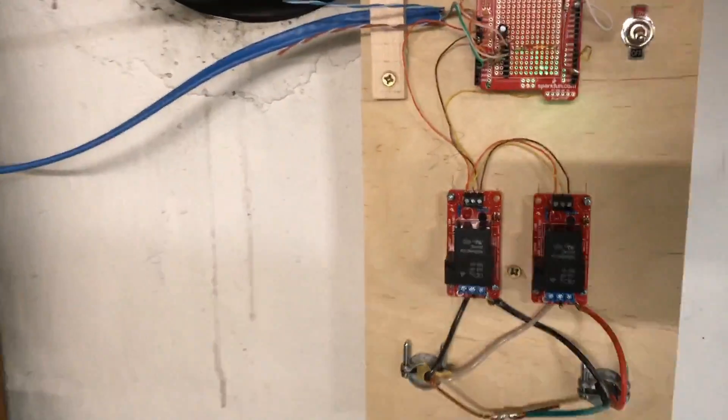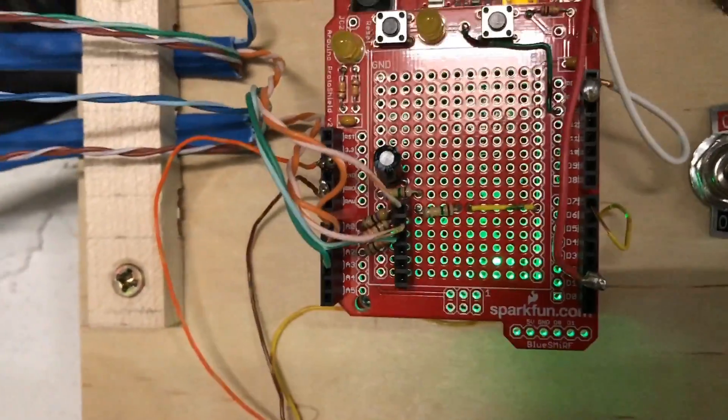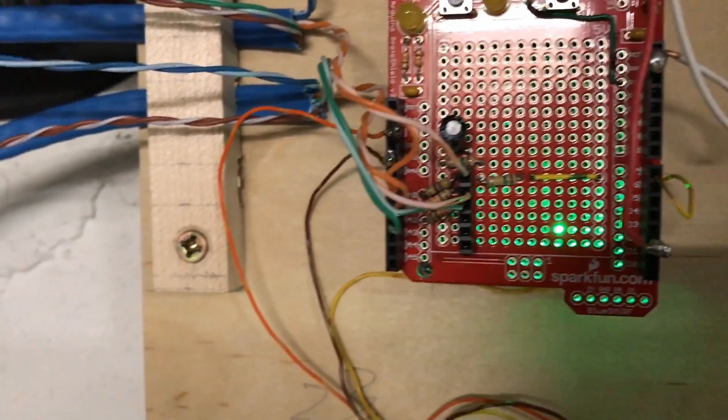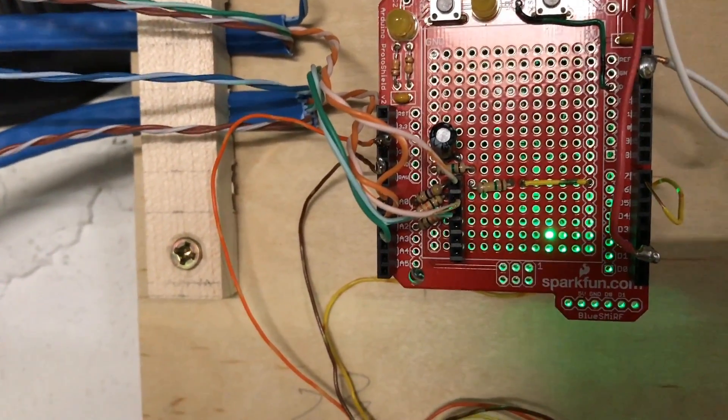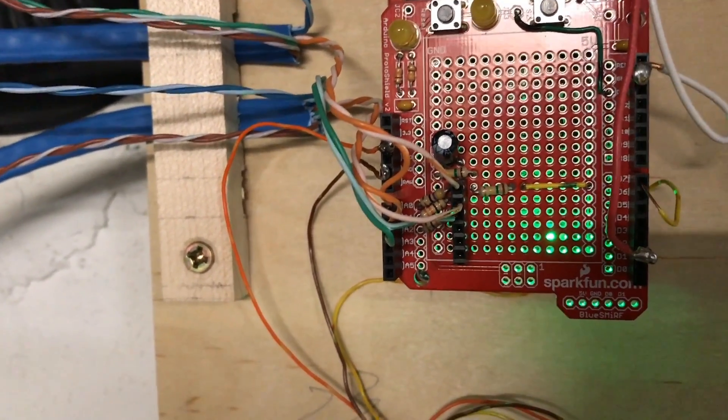So the circuitry here is actually really simple. I'll post the details online, but you can see that there's really just a couple resistors, a few wires, a capacitor. It's just a simple voltage divider. The wires on the left here are all the twisted pair wires that are running out to the current sensing transformers.